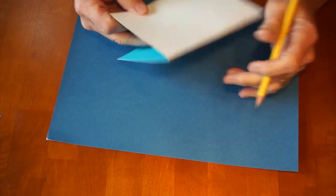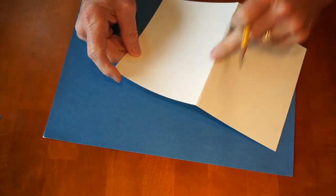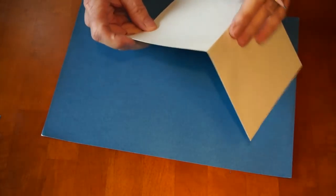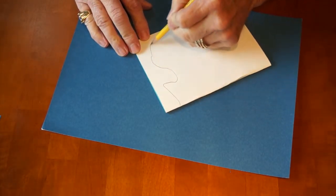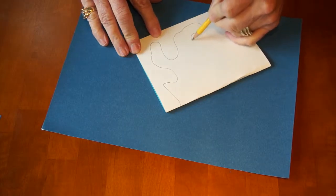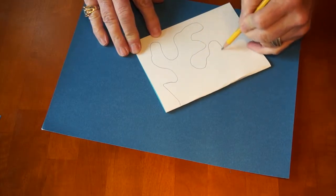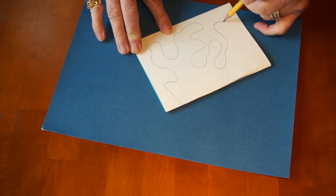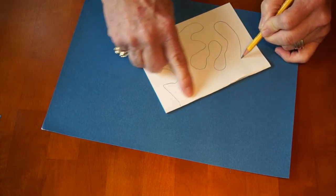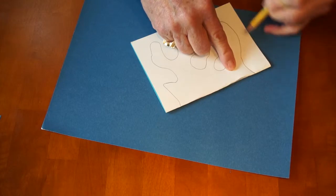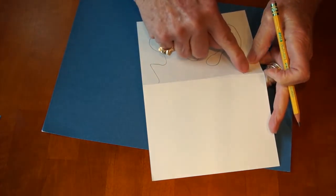Now you have to remember, this is the folded part. You're going to draw on the fold. You're going to start on the fold and you can draw any kind of a shape you want. You don't want it too complicated because you're going to cut this out with scissors. You start on the fold and you end on the fold. Don't come over here or here. You start on the fold and you end on the fold.